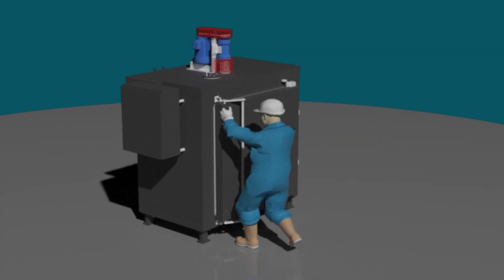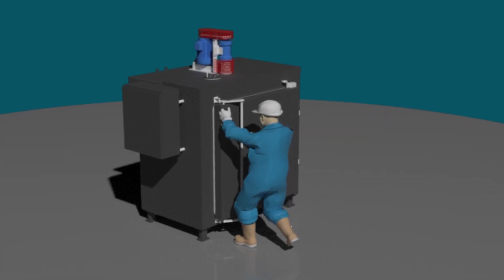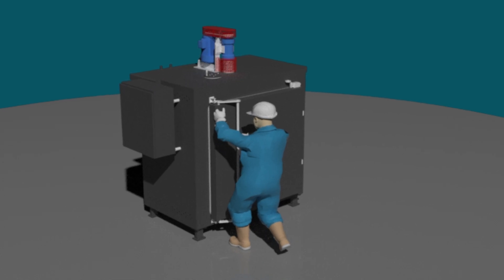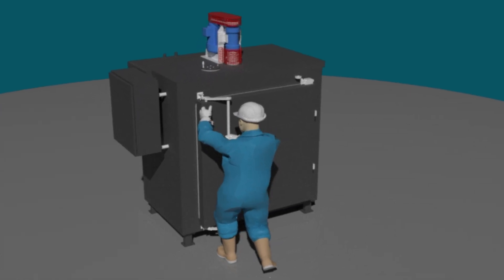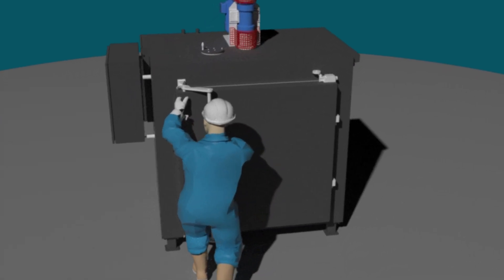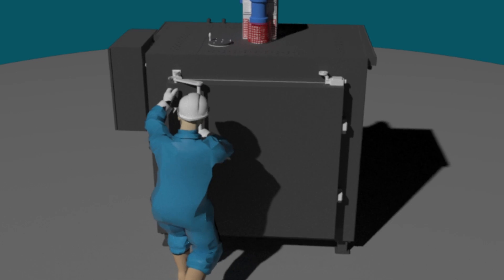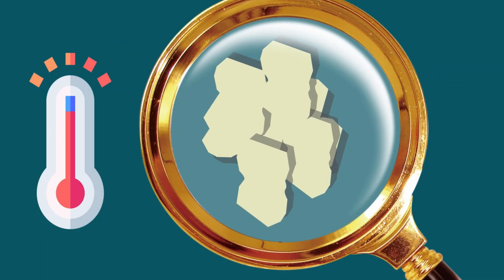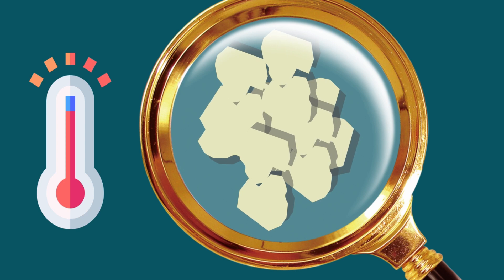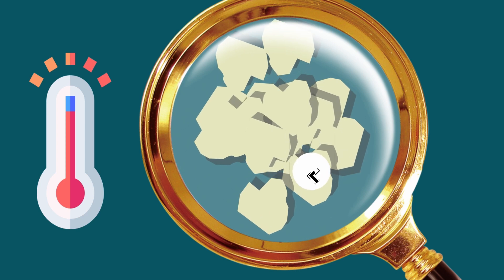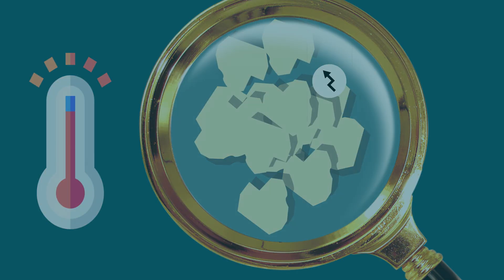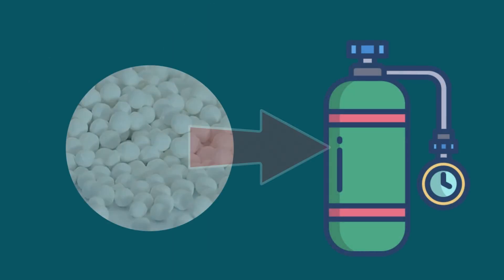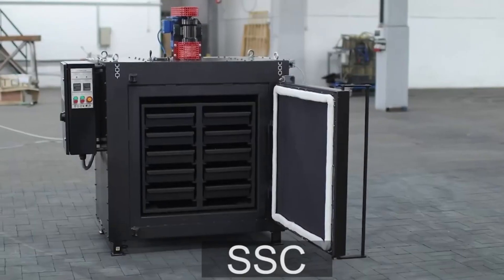An operator simply needs to select the required operation mode. When the set temperature is reached, the timer starts counting down the exposure time, after which heating is disengaged. During heating, the zeolite pores expand and undergo cleaning, which means that the absorptivity of the sorbent is reclaimed. After the zeolite is cooled, it can be used again in oxygen concentrator cylinders.